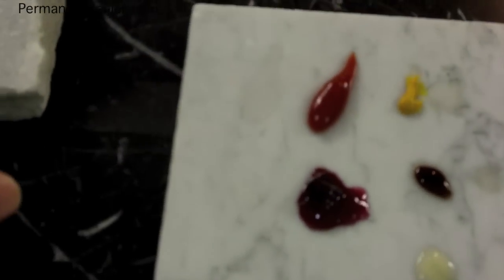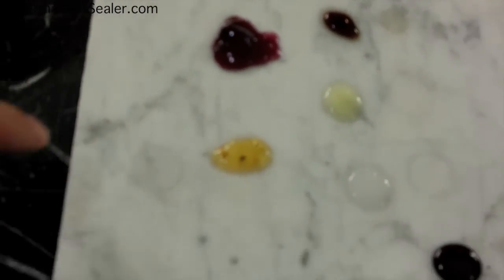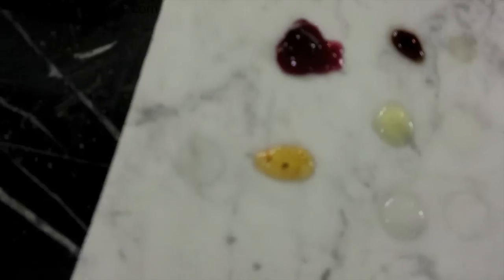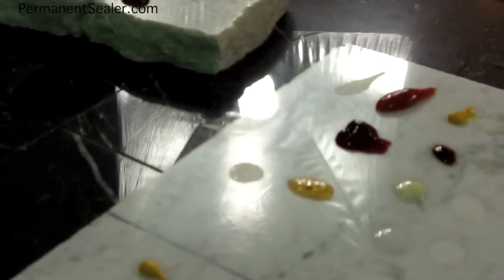Same thing for the Italian dressing. We have a stain—as you can see, look over the stone, you can see stains—and then as you angle it you see the etch right there.